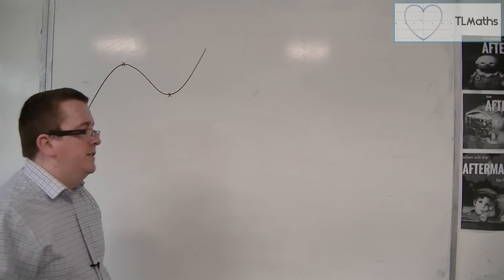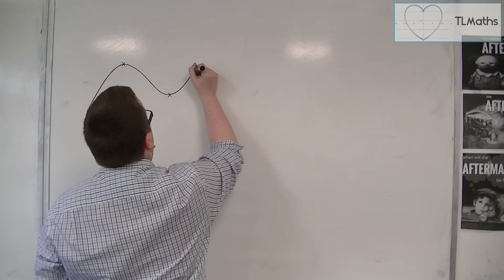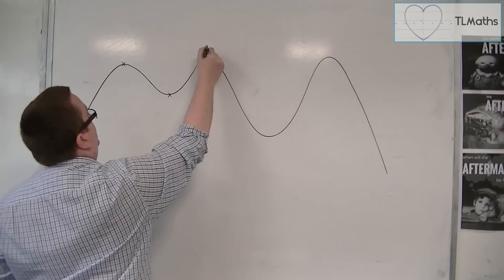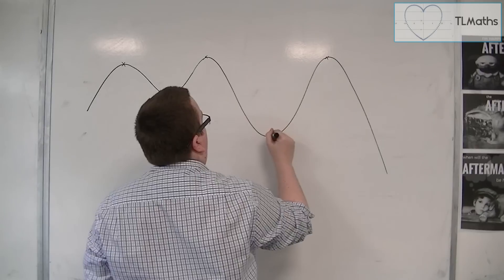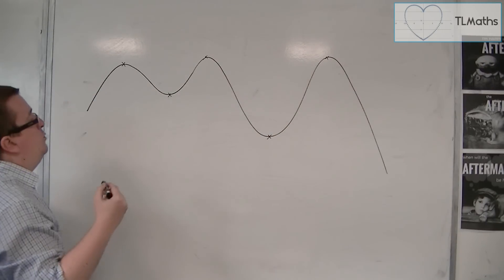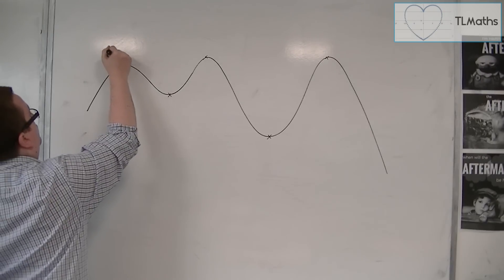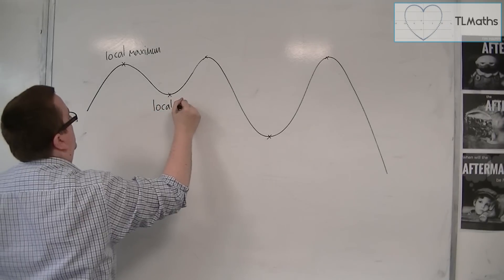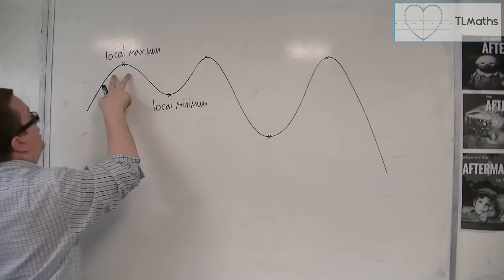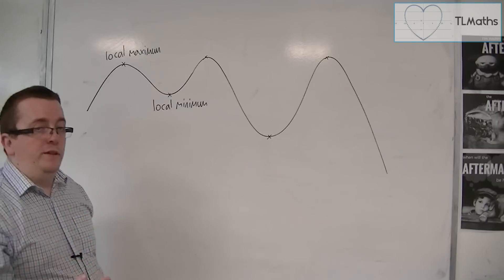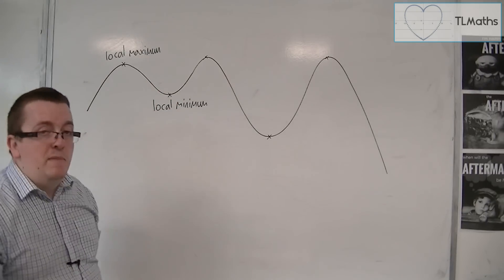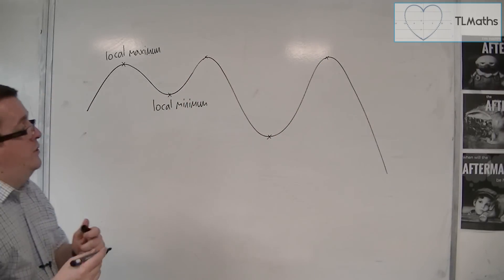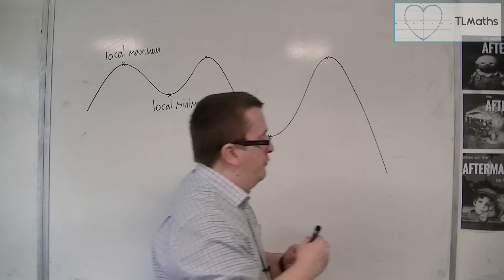In actual fact, if I continued this curve, the curve may have several maximums and several minimums. And they are referred to as a local maximum and a local minimum. What that means is within the local area, it is a maximum point, and within this local area, it is a minimum. This would be a local maximum, local minimum, and local maximum. And the curve could keep on having these over and over again.